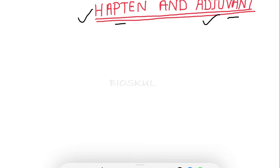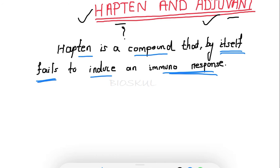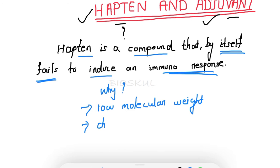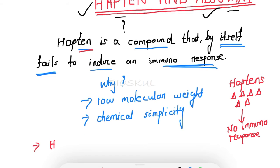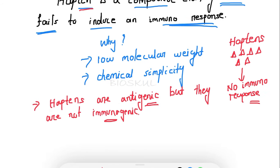So what is hapten? Hapten is a compound that by itself fails to induce an immune response. Why? Because of its low molecular weight and chemical simplicity. Also, haptens are antigenic — though haptens are antigenic, they are not immunogenic.